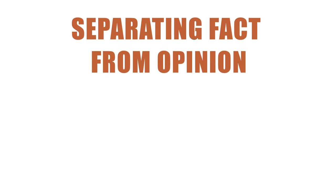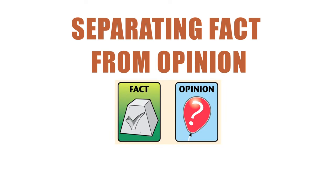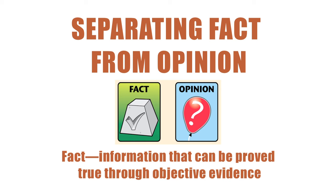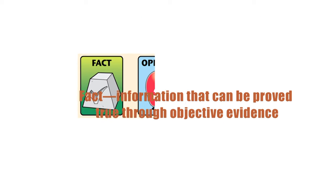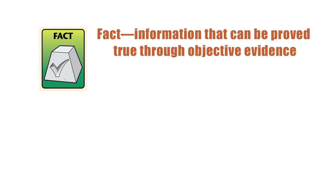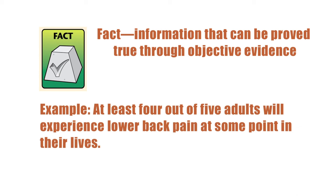First, we'll look at the difference between fact and opinion. A fact is information that can be proved true through objective evidence. Facts can be checked for accuracy and thus proved true. Here is an example of a fact: at least four out of five adults will experience lower back pain at some point in their lives. Extensive medical research confirms that this statement is true.